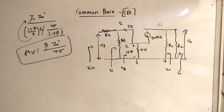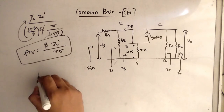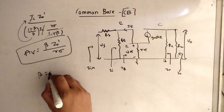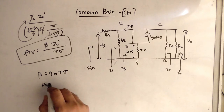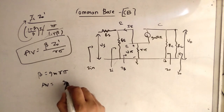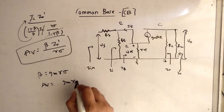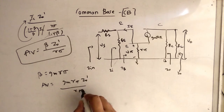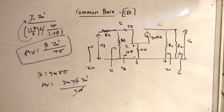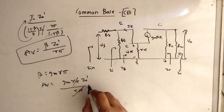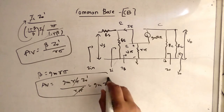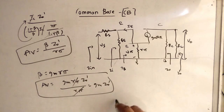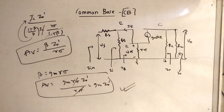We can simplify further: since beta equals GM times R pi, AV becomes GM times R pi times ZO' divided by R pi. The R pi terms cancel, giving AV equals GM times ZO'. This is the simplified version of AV.